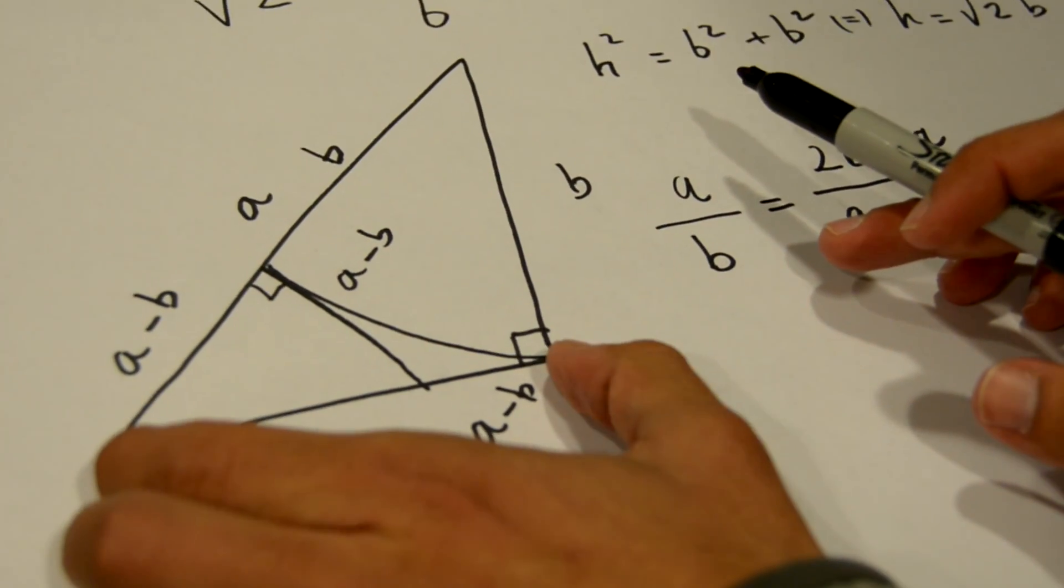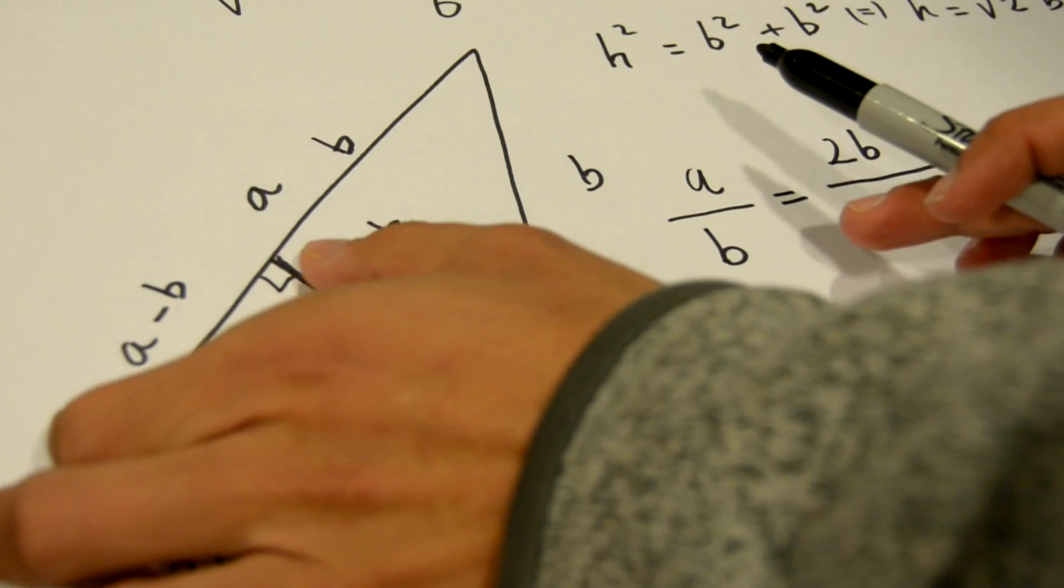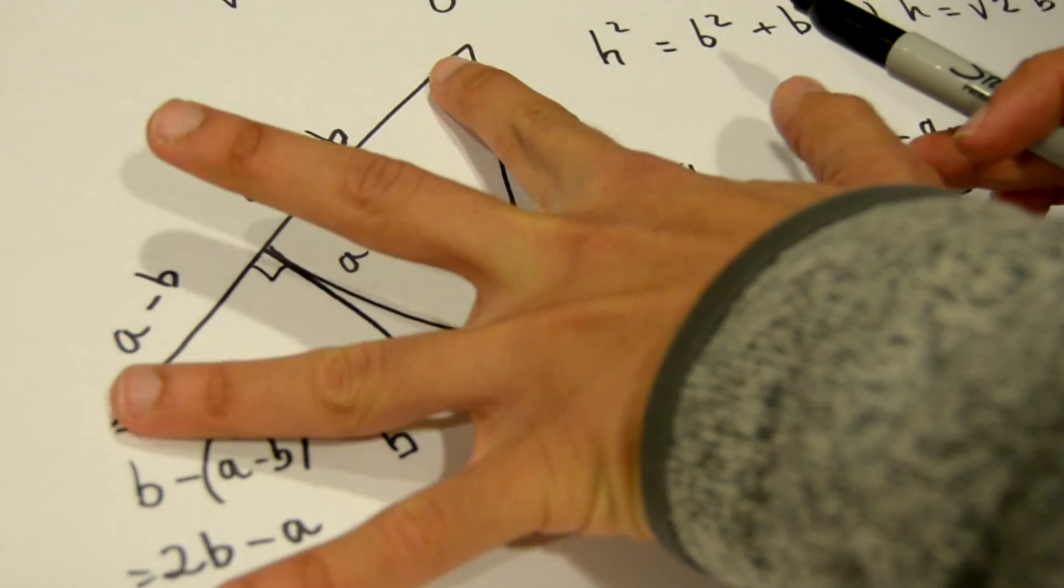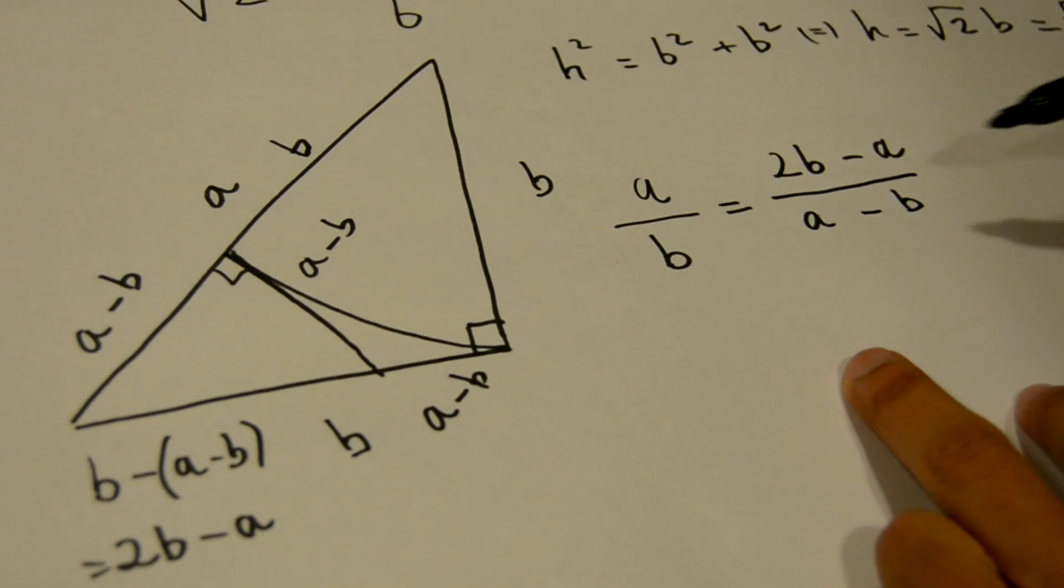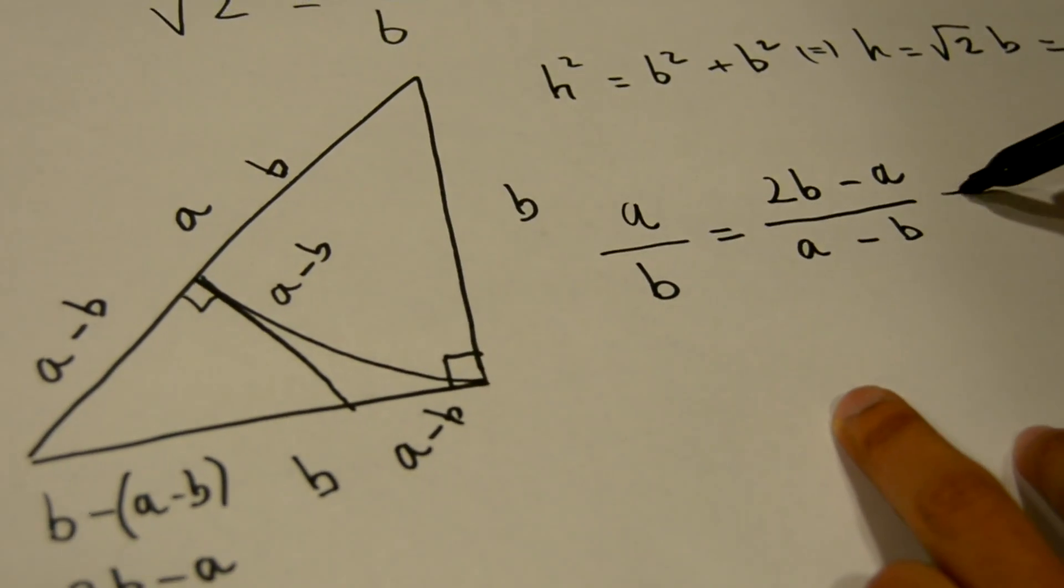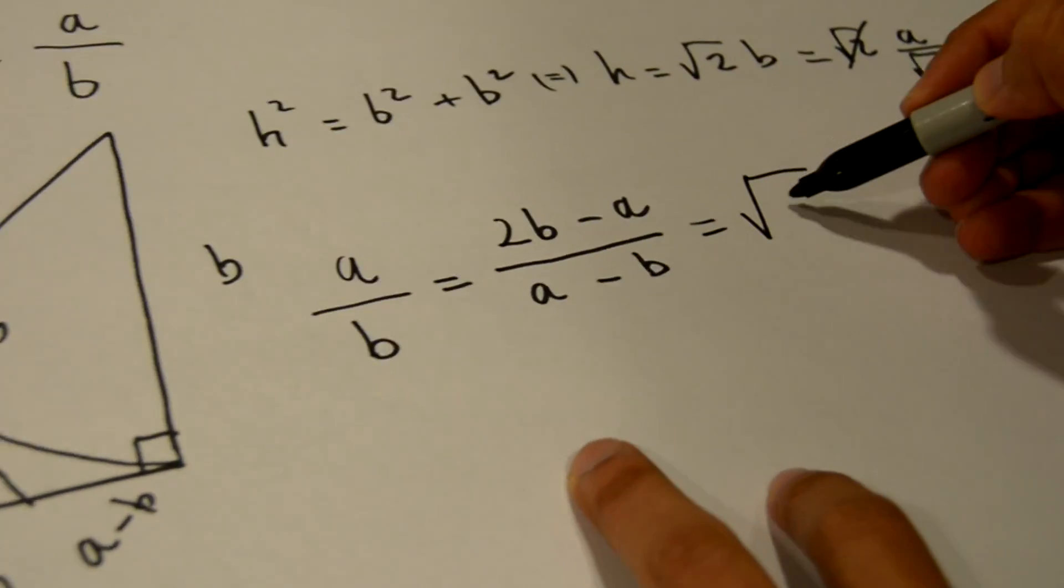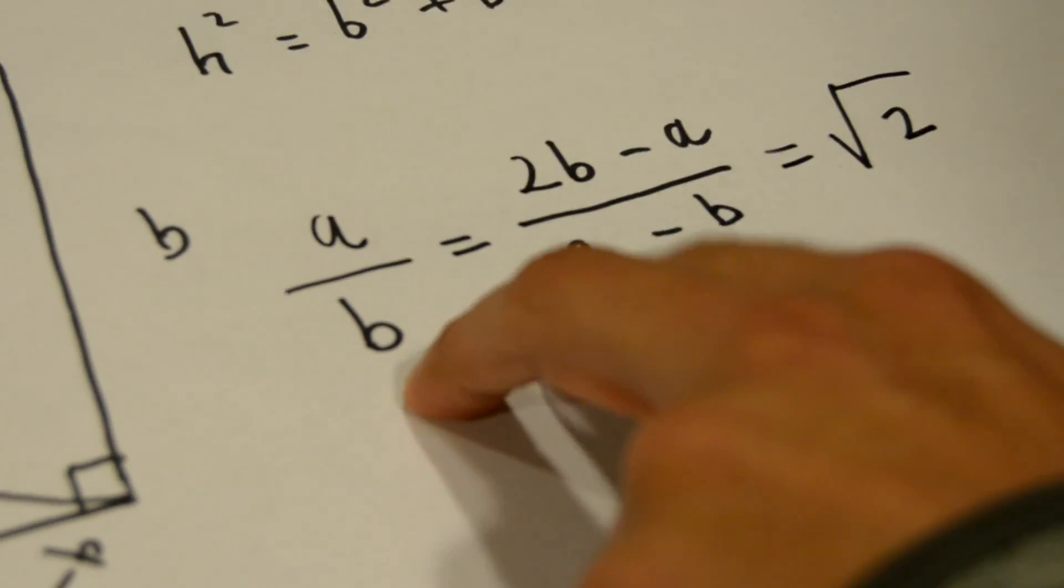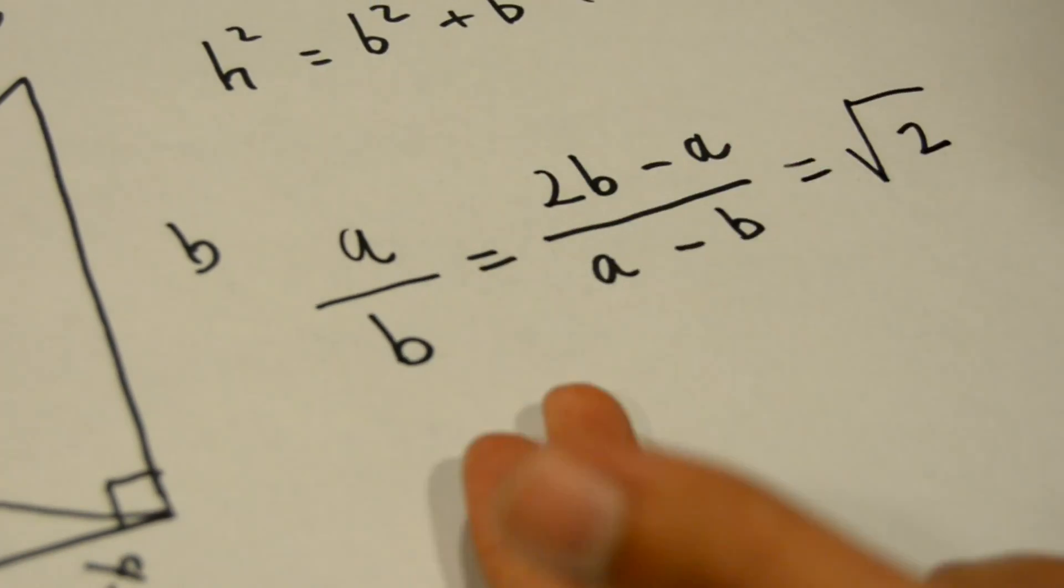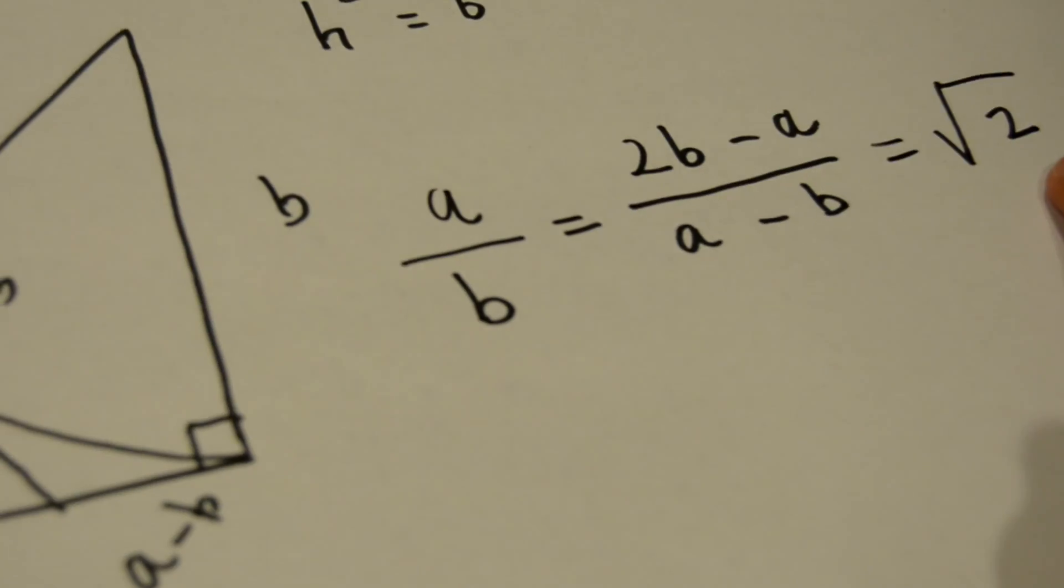This segment is smaller than this segment, and this segment is of course smaller than this segment. Our initial assumption was that a over b, which equals the square root of 2, was a fully reduced fraction. So a and b were the lowest integers that could express the square root of 2,